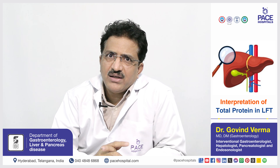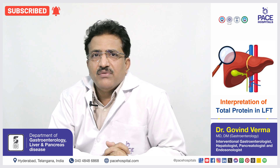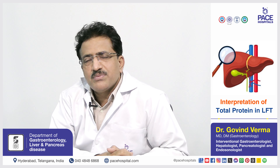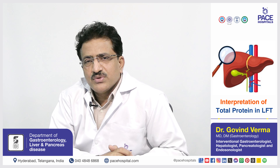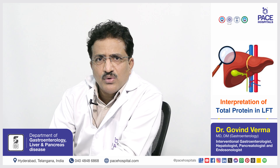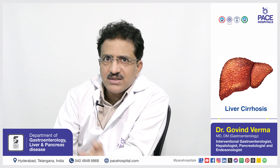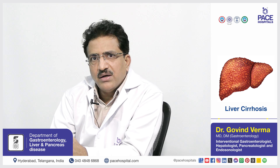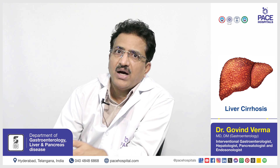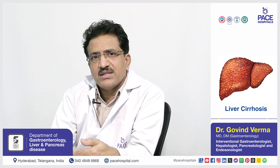Total protein is divided into serum albumin and serum globulin, reflecting liver synthetic function. In cirrhosis, both albumin and total protein are low. If globulin is elevated relative to albumin, autoimmune liver disease should be considered, as autoimmune liver disease or cirrhosis of autoimmune etiology can present with high globulin compared to albumin.